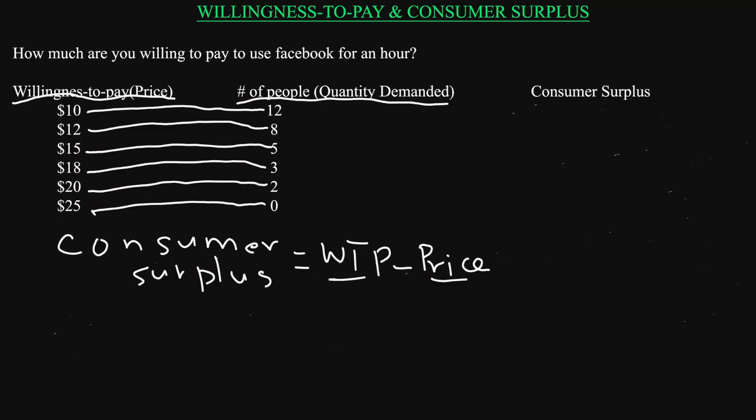This is how much you value the good, and the price is how much you actually pay. So if your valuation of the good is higher than how much you pay, then you have a consumer surplus.